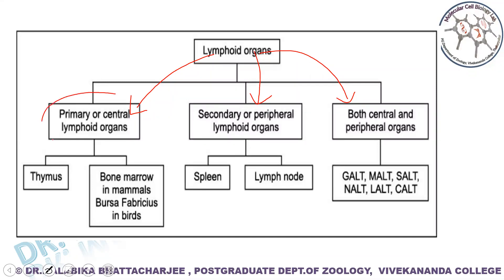Among the primary lymphoid organs, the two basic categories observed in humans are thymus and bone marrow. In birds, the equivalent is the Bursa of Fabricius. When we are talking about the secondary lymphoid organs, we will be dealing with spleen and lymph nodes. And finally, the tertiary lymphoid organs include the various mucosal-associated lymphoid tissue.